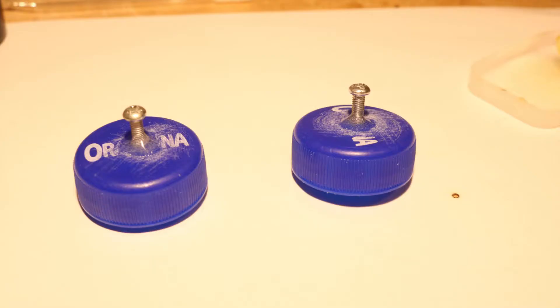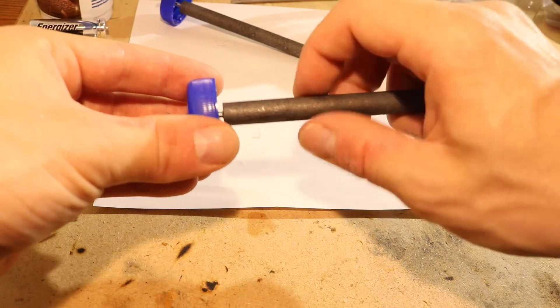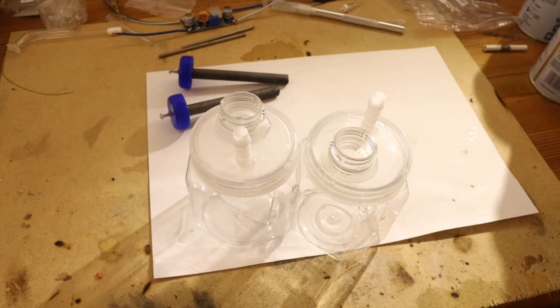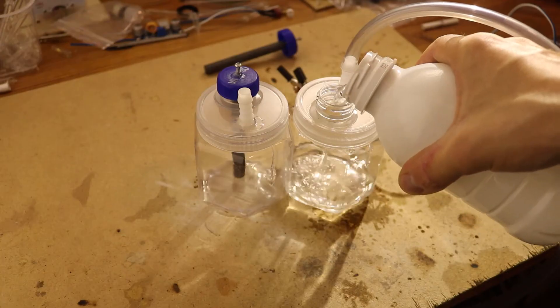To hold the electrodes I glued small screws in the lids and drilled holes in the graphite electrodes just big enough to screw them on. In the lids of the two containers I cut two holes, one for the electrodes and the other one for a hose connection for the gases. And then I'm basically done.